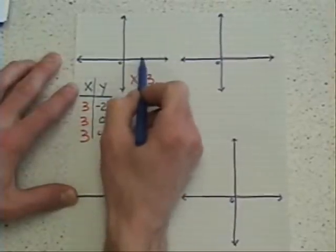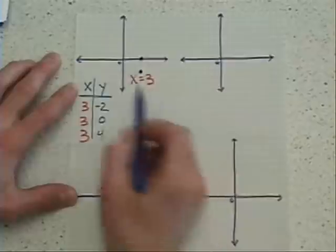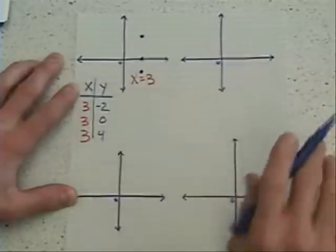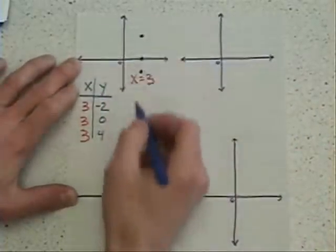3, 0 is, as we saw in the previous video, right here. And 3, 4 is 3 over and 4 up. When I graph those 3 points, notice how they do form a vertical orientation.